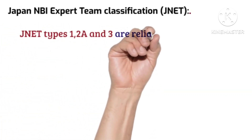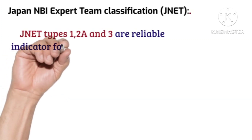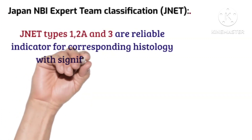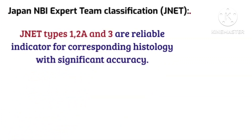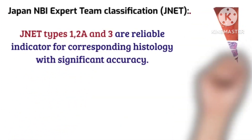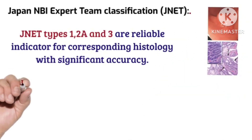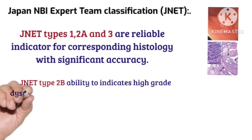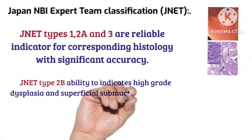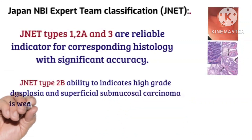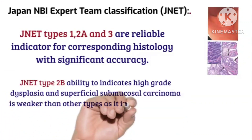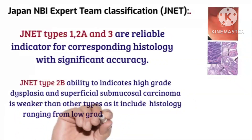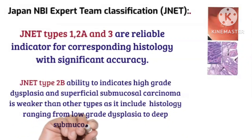JNET Types 1, 2A, and 3 are reliable predictors of their corresponding histology with significant accuracy. However, Type 2B's ability to indicate high-grade dysplasia and superficial submucosal carcinoma is weaker than the other types, as it includes histology ranging from low-grade dysplasia to deep submucosal carcinoma.